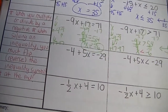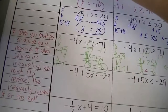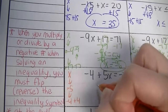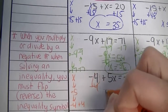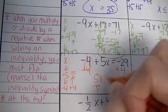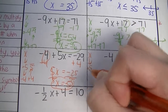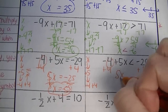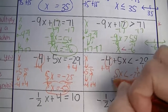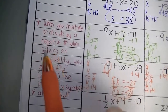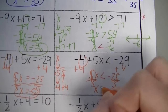Next problem — do the same thing. Started with x, then we multiplied by 5, then subtracted 4. Inverse operation of subtracting 4 is to add 4 to both sides. We get 5x equals negative 25. Inverse operation of multiplying by 5 is to divide by 5 on both sides. So x equals negative 5. On the inequality side, build and solve it the same way. Notice we just divided by a positive, so you only flip the sign when you multiply or divide by a negative number. We didn't do that, so it stays consistent.